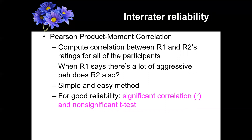The last method — and probably the most commonly used — is Pearson correlation. You compute the correlation between researcher one and researcher two's ratings for all participants. When researcher one says there's a lot of aggressive behavior, does researcher two also say that? It's a simple and easy method. When using this approach, you want two things: a significant correlation between the two researchers, and a non-significant t-test.